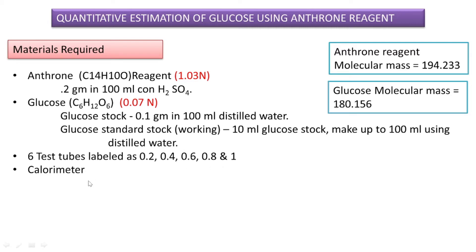For performing this experiment we are using a colorimeter. A colorimeter measures the amount of a particular substance in a solution by measuring the absorbance of a particular wavelength of light by that substance present in the sample. By measuring that absorbance, the colorimeter quantifies the amount of that particular component present in the solution.